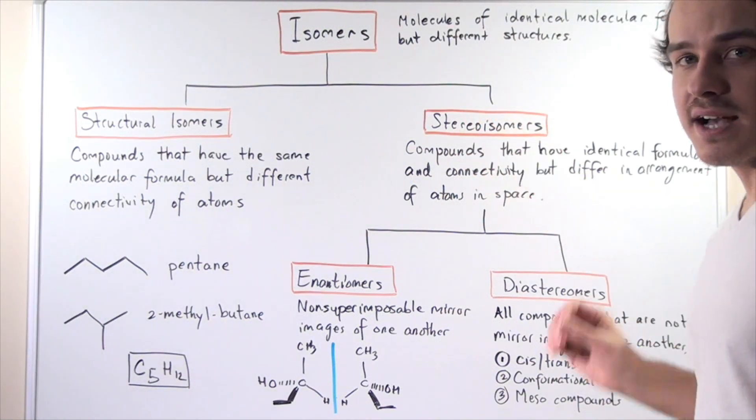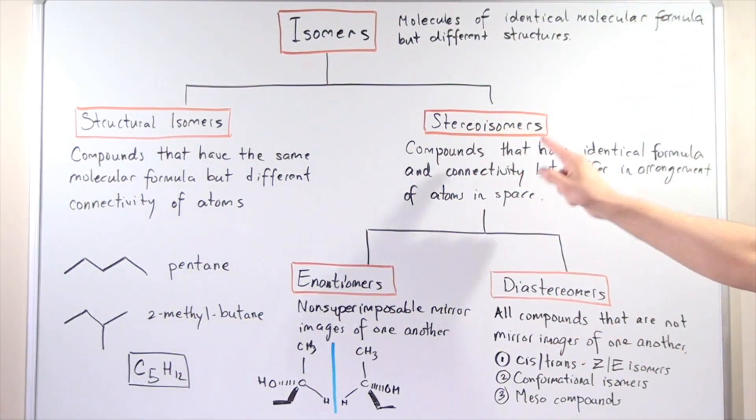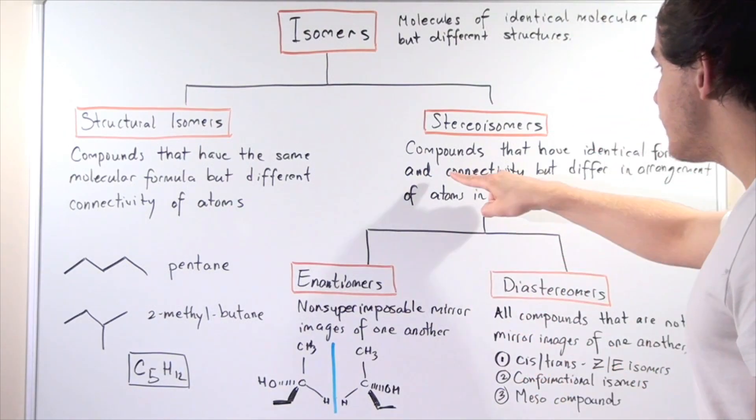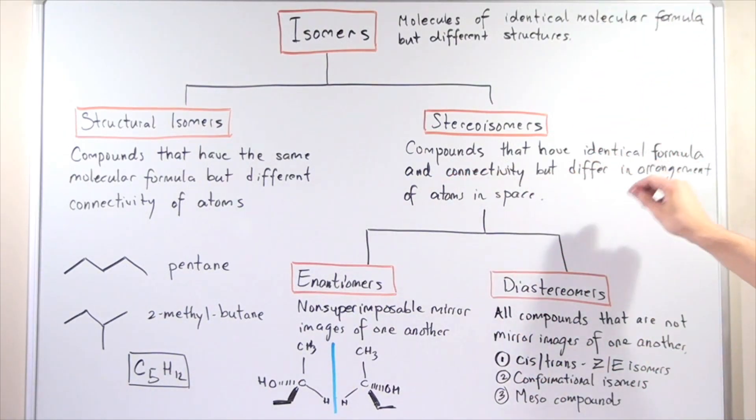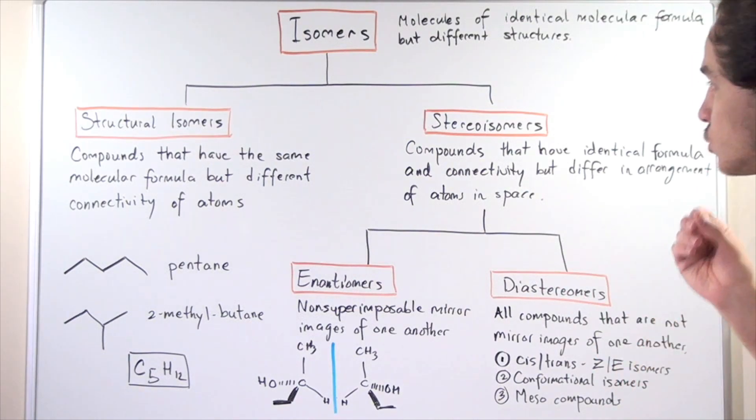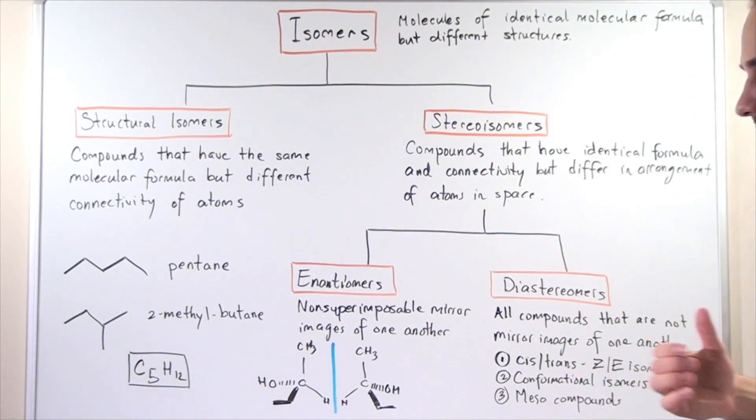Now let's have a look at stereoisomers. These are compounds that have the same exact molecular formula and the same connectivity, but they differ in the arrangement of atoms in space. Two types of stereoisomers exist.